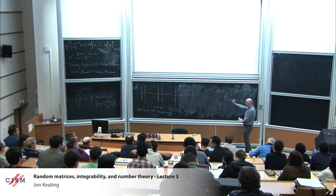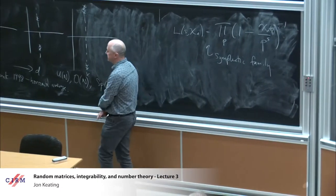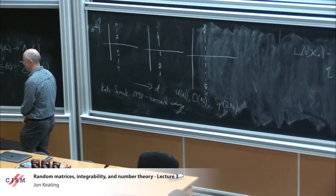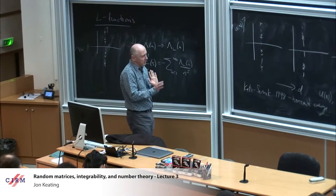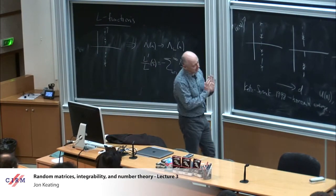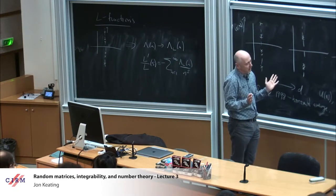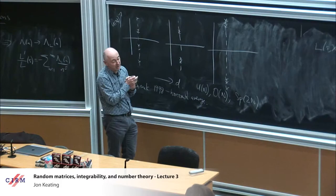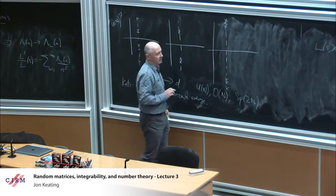That's all I want to say about this generalization, other than that it exists and is very important. The picture is the same as for the Riemann zeta function: you do complicated calculations, the combinatorics become very difficult, but lo and behold you get an answer that matches an answer with some determinantal structure coming from random matrix theory. But you don't see that integrable structure anywhere in the number theory — it's simply a coincidence.